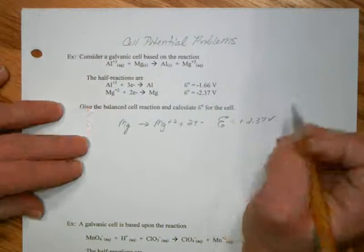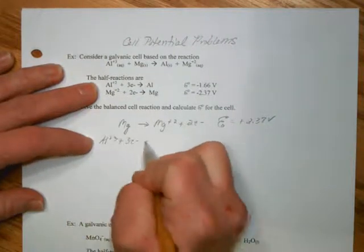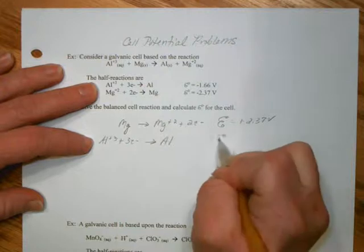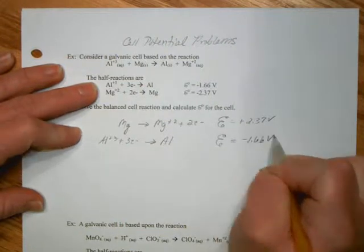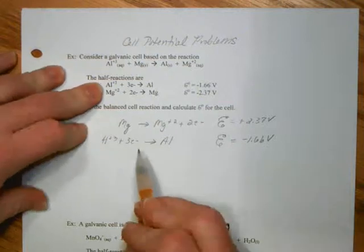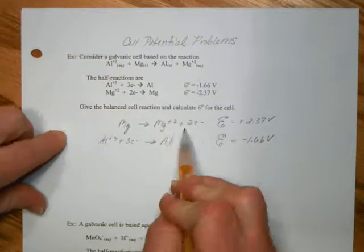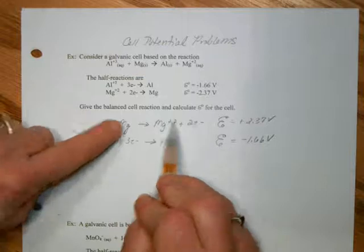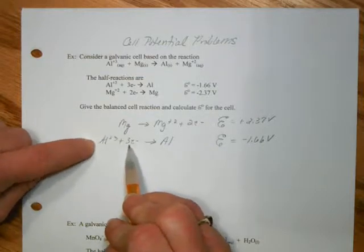I have to make sure that each reaction is balanced. So we have one magnesium, one magnesium, great, with my two electrons at balanced charge. One aluminum, one aluminum, great, with my three electrons at balanced charge.